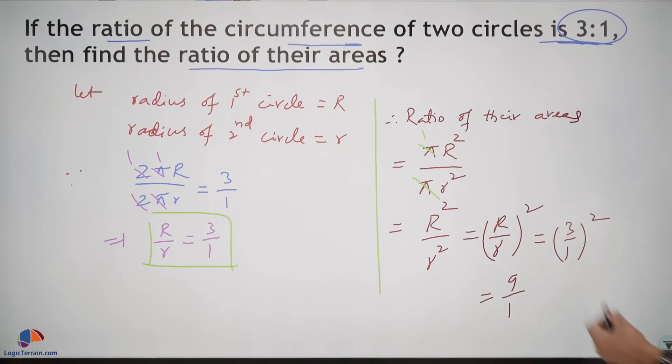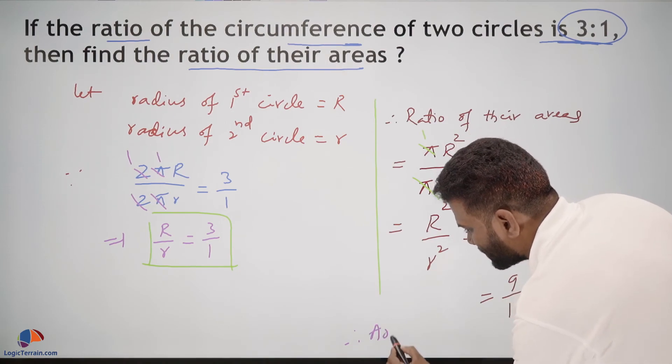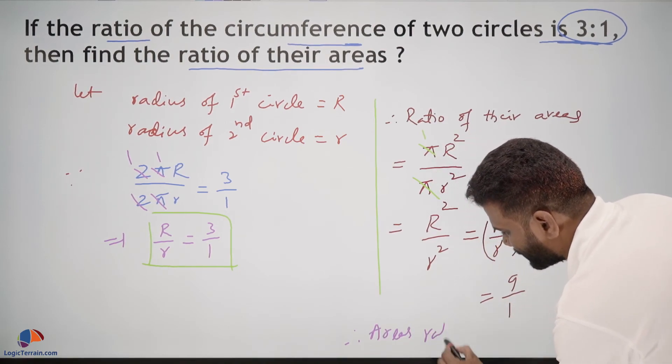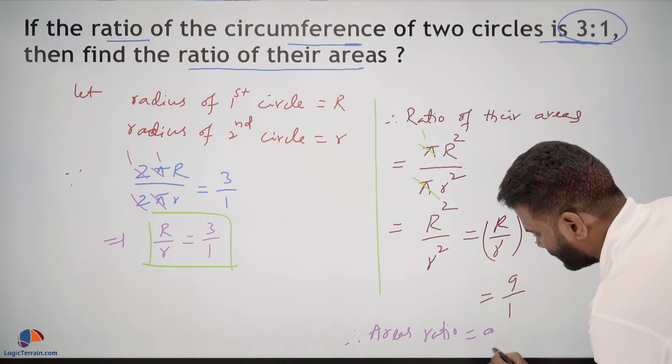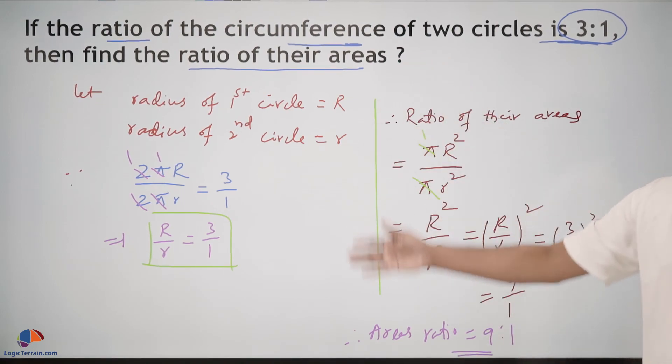And further, 3 squared is 9 and 1 squared is 1. Therefore, areas ratio equals 9 is to 1. Clear, this is it.